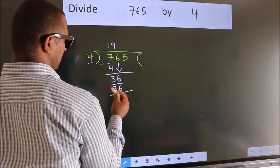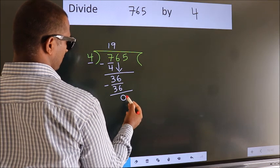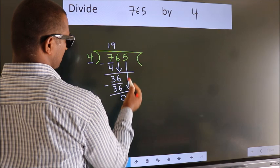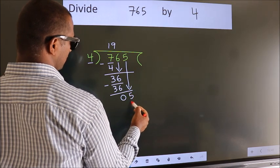Now, we subtract. We get 0. After this, bring down the beside number. 5 down. So, 5.